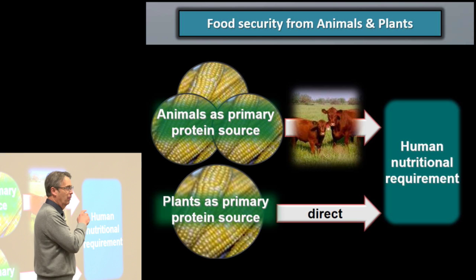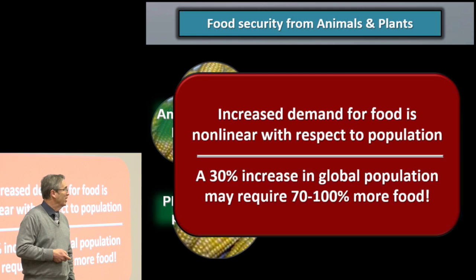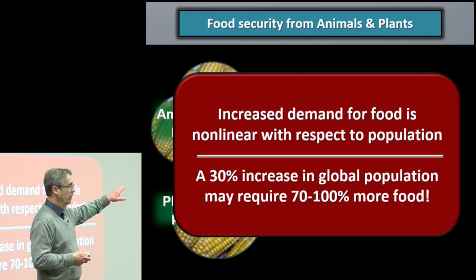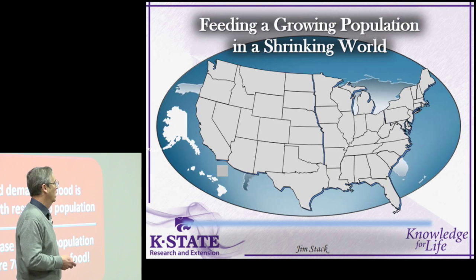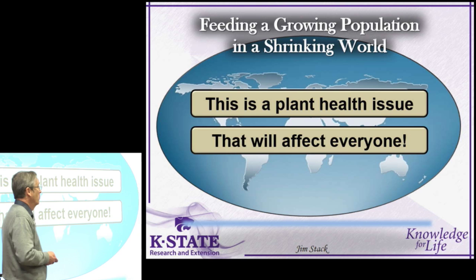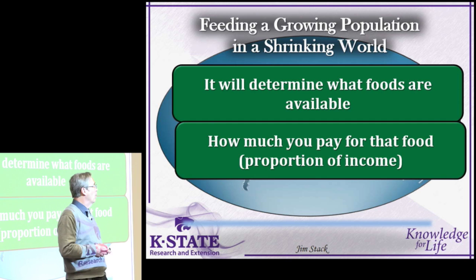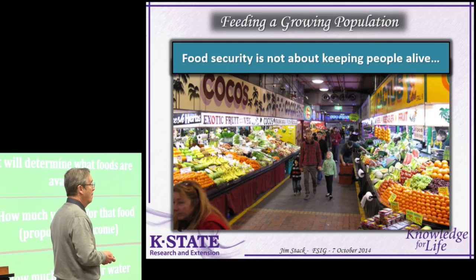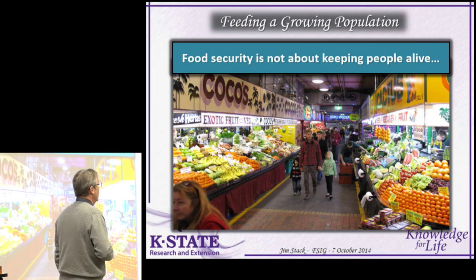Increased demand for food is non-linear with respect to population. A 30% increase in global population may require 70 to 100% more food — that was from FAO, the United Nations Food and Agricultural Organization. Our own calculations in my lab suggest the estimates are really 24% to 43% depending upon assumptions about food loss. Even 24% is a huge number. Remember, it takes about eight years to develop a new wheat variety. There's no new land or water to develop, so we have to make more use of what we have. Food security is not about keeping people alive — it's about keeping people healthy.